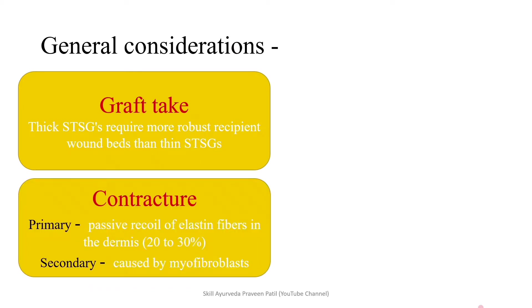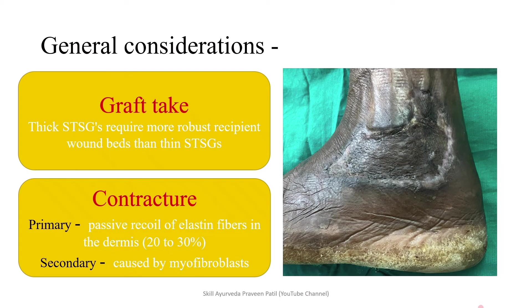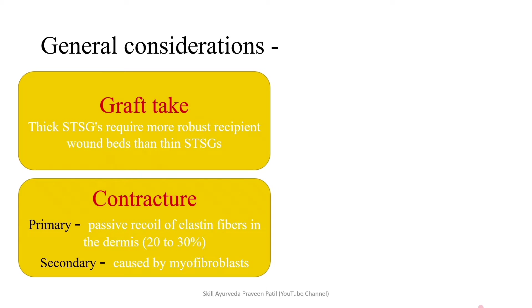Regarding contracture, there are two types: primary and secondary. Primary contracture occurs soon after harvesting — 20 to 30 percent of the harvested skin contracts — and is due to the passive recoil of elastin fibers in the dermis; it is more pronounced in thin STSG. Secondary contracture occurs after placing over the wound during wound healing, is due to myofibroblasts, and is more pronounced in thick STSG.